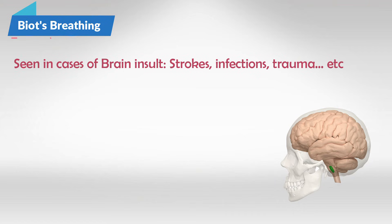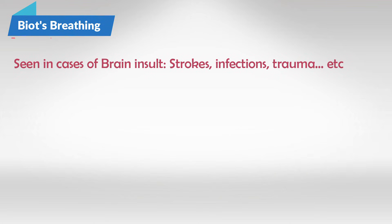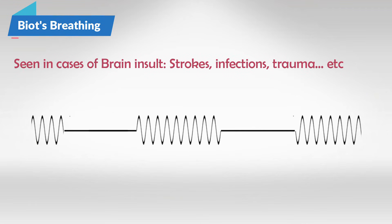The very high levels of carbon dioxide will trigger the breathing center, causing the brain to rapidly send a lot of signals to the breathing muscles. So the patient will breathe very heavily and very quickly. Soon after, all of this breathing will result in decreasing carbon dioxide levels, and so the breathing center will again be inhibited. Biot's breathing pattern is thus described as hyperventilation preceded and followed by a period of apnea.